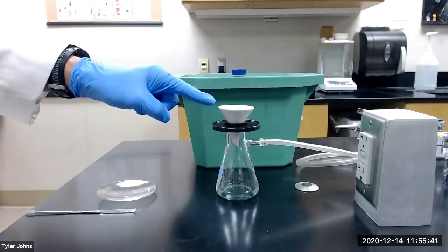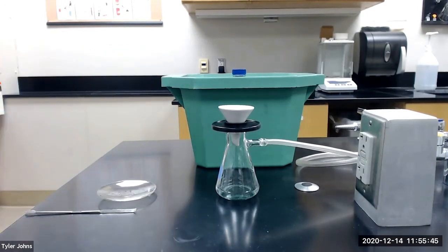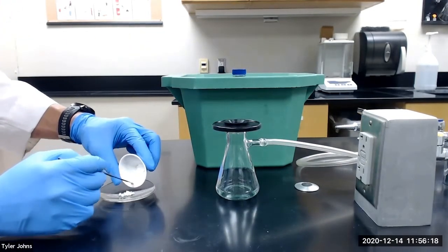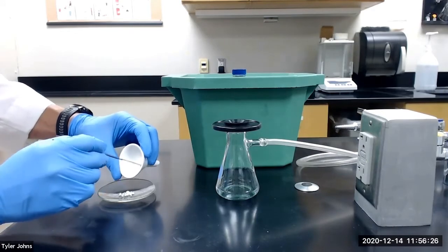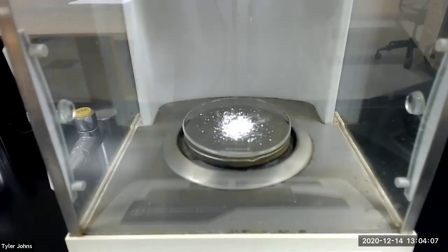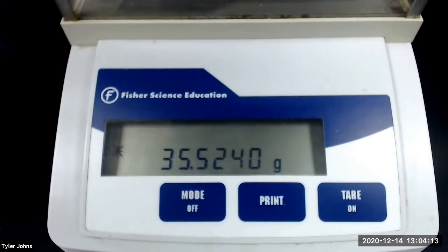We will next collect the benzylic acid on the pre-weighed watch glass and then dry for several minutes in an 80 degrees Celsius oven. After drying, the mass of the pre-weighed watch glass and the benzylic acid is 35.5240 grams.